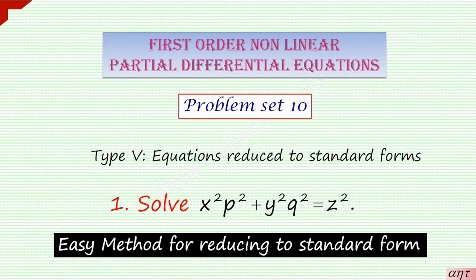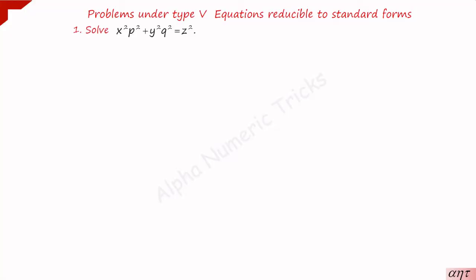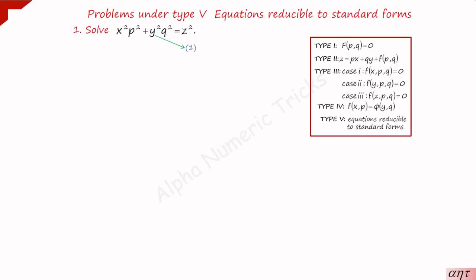This is our problem: x squared p squared plus y squared q squared is equal to z squared. Take that as equation number 1. Let me refresh you on the remaining four types of problems. First type of problem is f(p, q) = 0, where p and q alone are present.